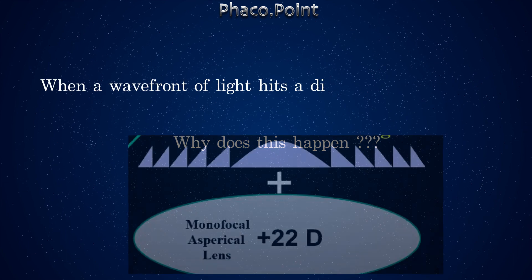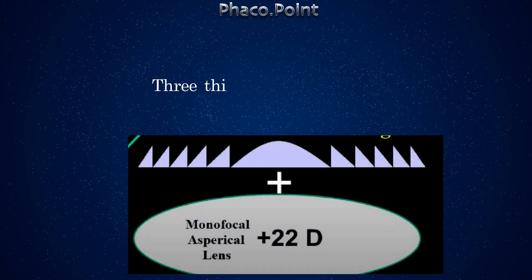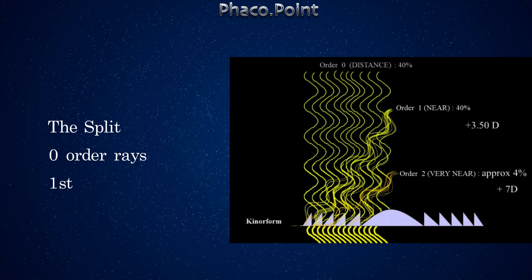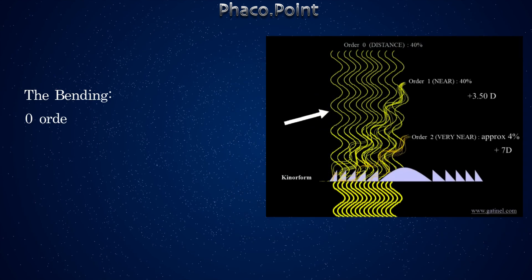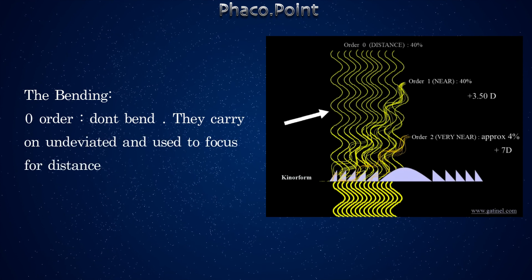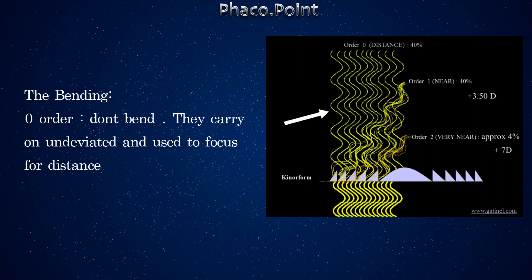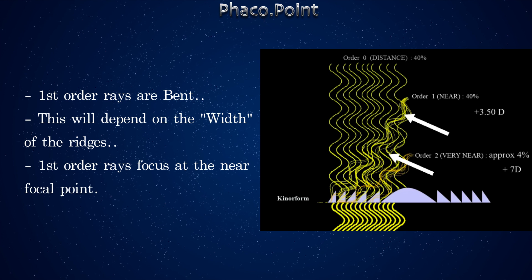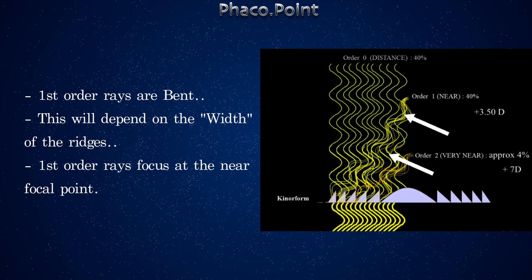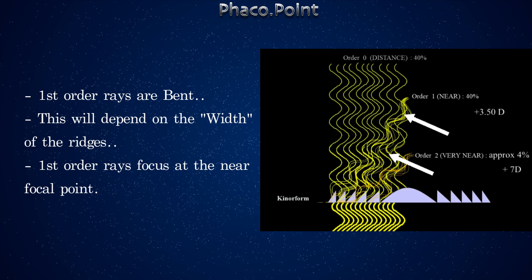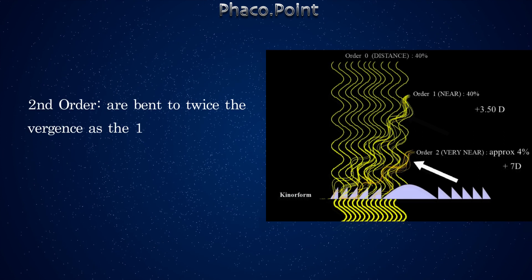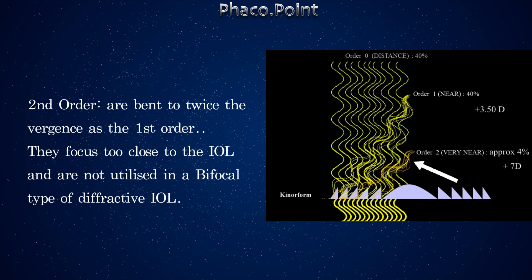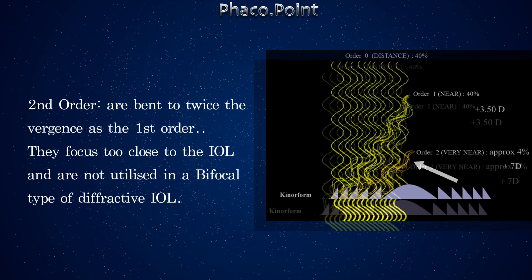Why does this happen? When a wavefront of light hits a diffractive form, three things happen to it: it gets split, bent, and partitioned. The split occurs into zero order, first order, and second order rays. The zero order rays don't bend — they carry on undeviated and are used to focus for distance. The first order rays are bent, depending on the width of the ridges or how tightly packed they are; the narrower the width, the more the bending, focusing at the near focal point for near vision. Second order rays are bent to twice the vergence of the first order, focusing too close to the IOL and are not utilized in a bifocal diffractive IOL.